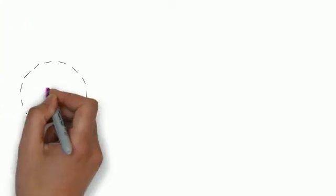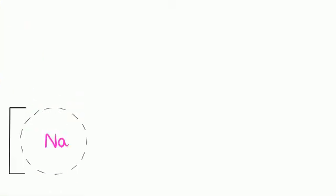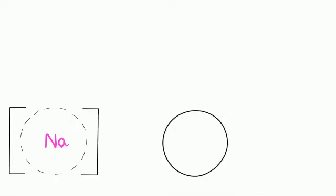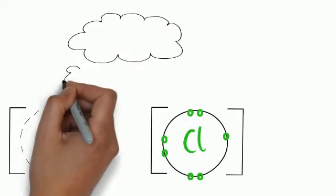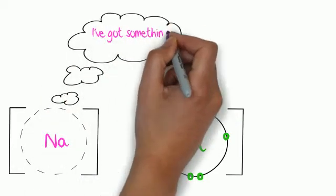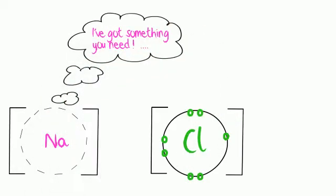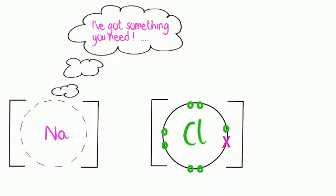In this example of ionic bonding in sodium chloride, only the outer shell electrons are shown — which is what you need to do for your exams. We don't worry about the inner electrons. In this example, sodium has donated its outer electron to the chlorine atom, and we have the ionic compound sodium chloride.